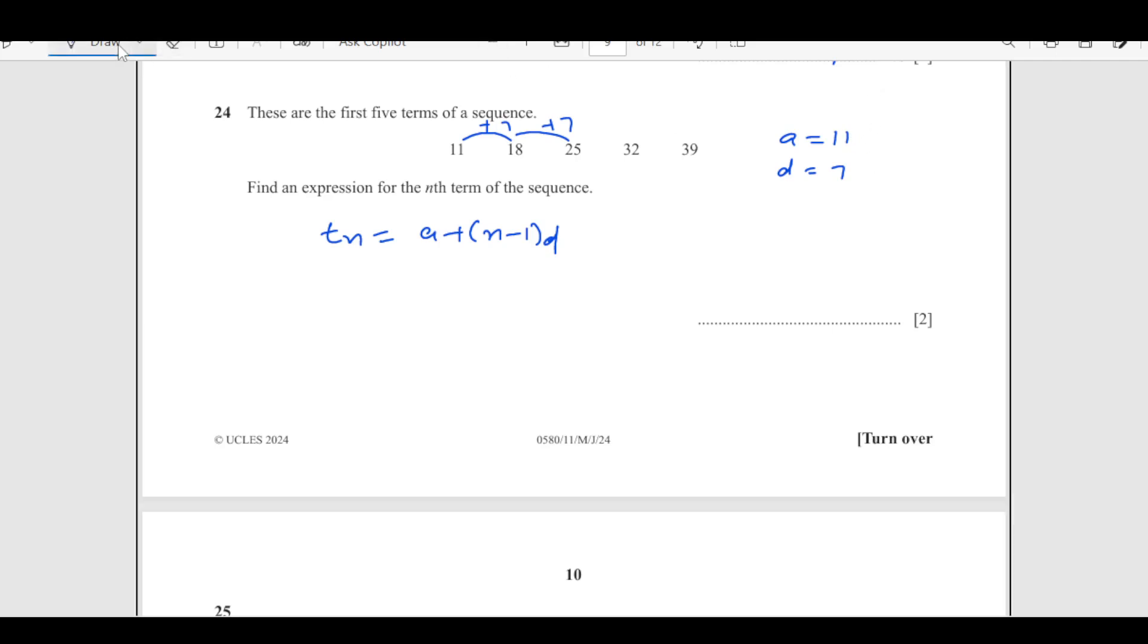Now we will substitute all this here. So to get the nth term, 11 plus n minus 1 into 7. So this is 11 plus 7n minus 7. So 7n plus 4, 7n plus 4 is the answer.